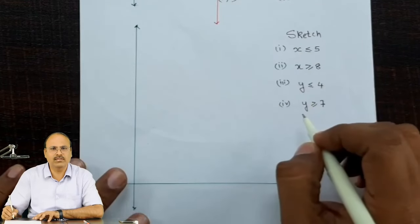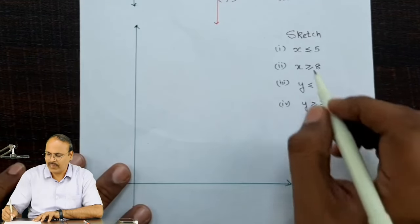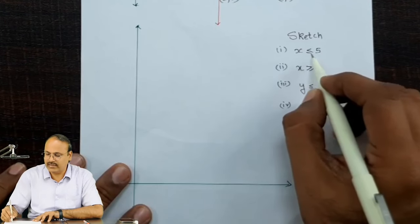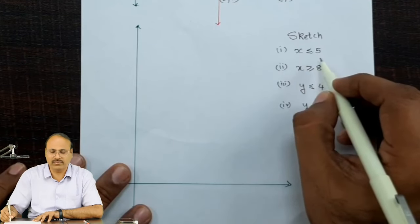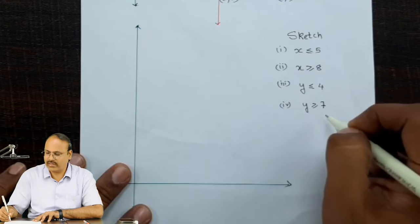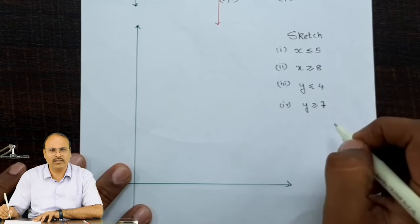We have taken four examples which we are going to do in this part. Let us say, for example, we have to draw the sketch of the linear inequality x less than equal to 5 or x greater than equal to 8, y less than equal to 4 and y greater than equal to 7. We will do these four examples here.